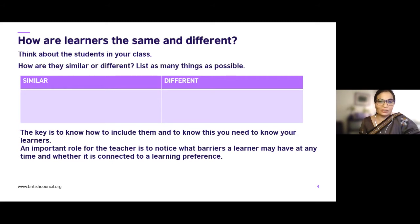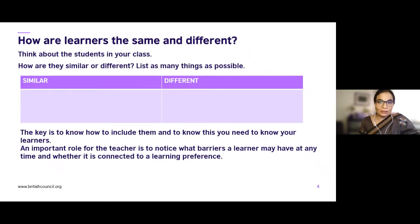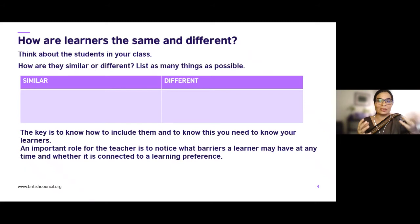An important role for the teacher is to notice what barriers a learner may have at any time and whether it is connected to a learning preference. Some people like to listen to music; others need absolute silence. It may not be immediately obvious, but the way people learn and the fact that we are all different affects the way we work. Thinking about differences helps us identify students as individuals, but we also need to think about the ways students are similar. We have to look at both differences and similarities as teachers.